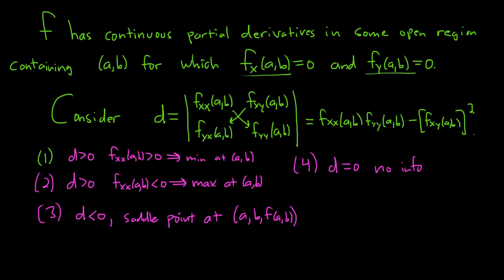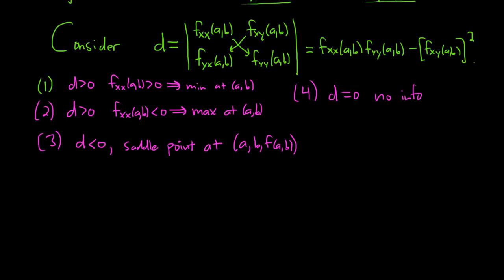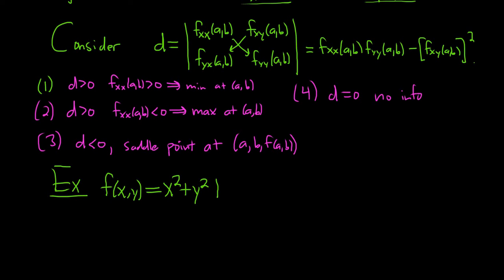Let's go ahead and do a simple example to illustrate the test. Find all relative extrema and possible saddle points of the function f(x, y) = x² + y² + 6x − 12y − 3.